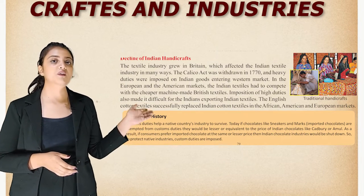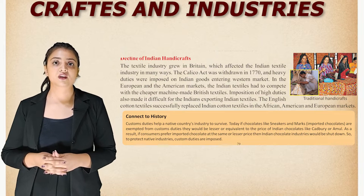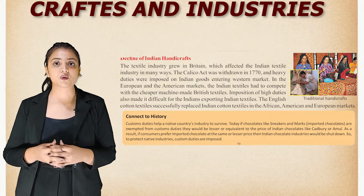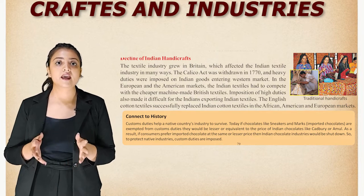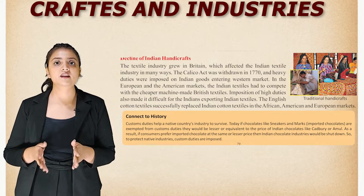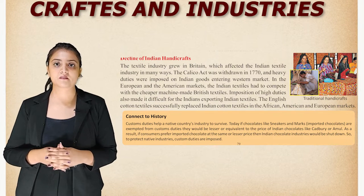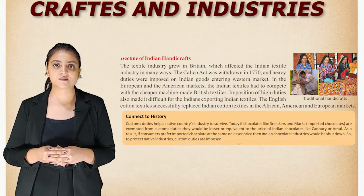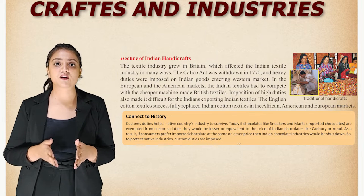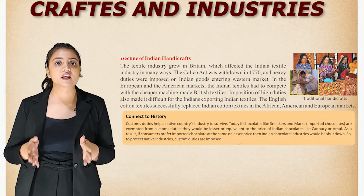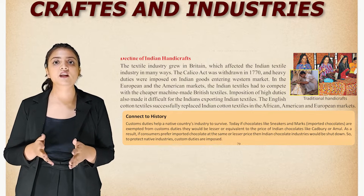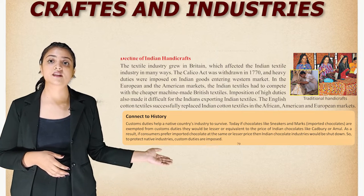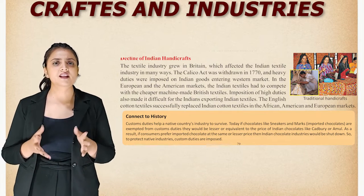Now let's talk about the decline of Indian handicrafts. The textile industry grew in Britain, which affected the Indian textile industry in many ways. The Calico Act was withdrawn in 1770, and heavy duties were imposed on Indian goods entering the western market. In the European and American markets, Indian textiles had to compete with cheaper machine-made British textiles. The English cotton textile successfully replaced Indian cotton textiles in the African, American, and European markets.